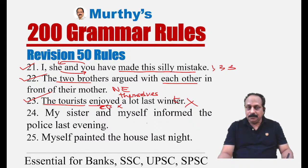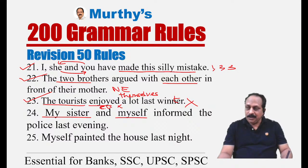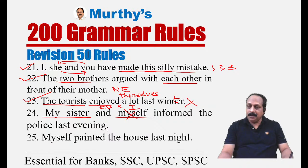Sentence twenty-four: 'My sister and myself informed the police last evening.' This is a common error. 'Myself' is in the subject position, but we cannot use a reflexive or emphatic pronoun in the subject position. We must use the personal pronoun subject form. First person singular subject is 'I.' The correct sentence is: 'My sister and I informed the police last evening.'